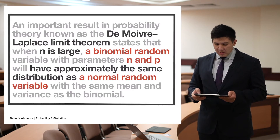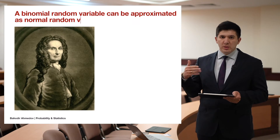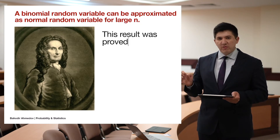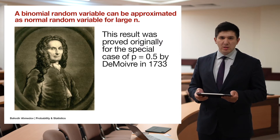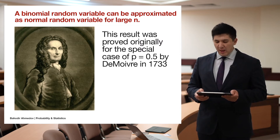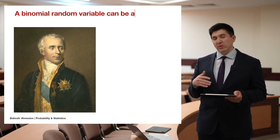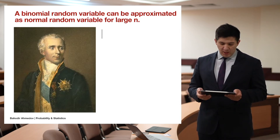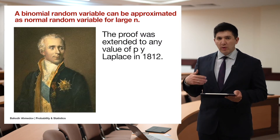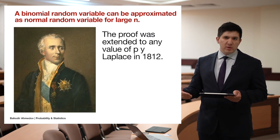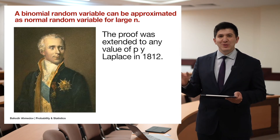This result was first proven for p equal to 1/2 by French mathematician de Moivre in 1733, and later generalized to other values of p by Laplace in 1812. We are going to solve a couple of problems to see how to apply this technically.